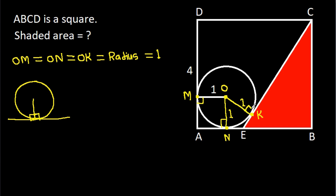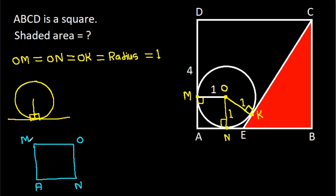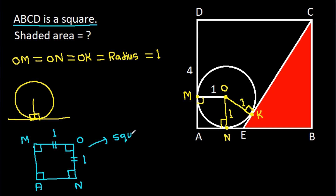In quadrilateral ANOM, this angle will be 90 degrees because ABCD is a square, so this angle is 90 degrees. This angle is also 90 degrees, so this angle will be 90 degrees. We have OM equal to ON equal to 1, which means ANOM is a square.